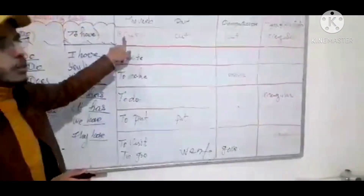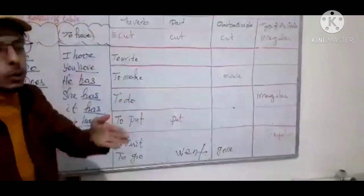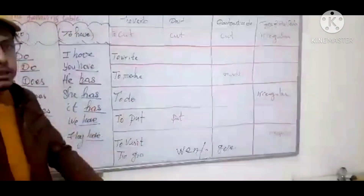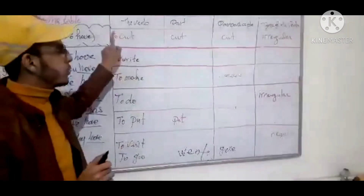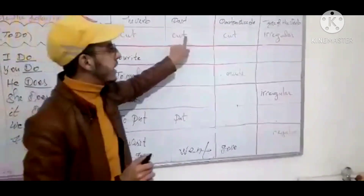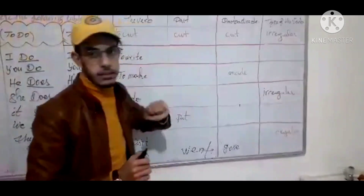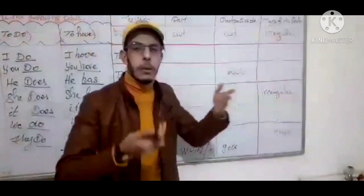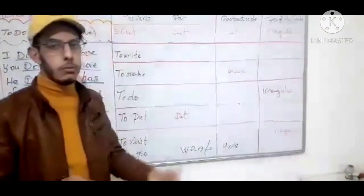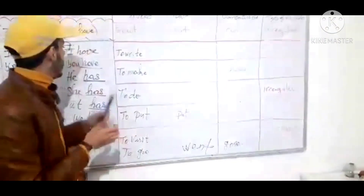Let's start with the verb 'to cut.' The past is 'cut,' and the past participle is 'cut.' It's an irregular verb — the forms are all the same.